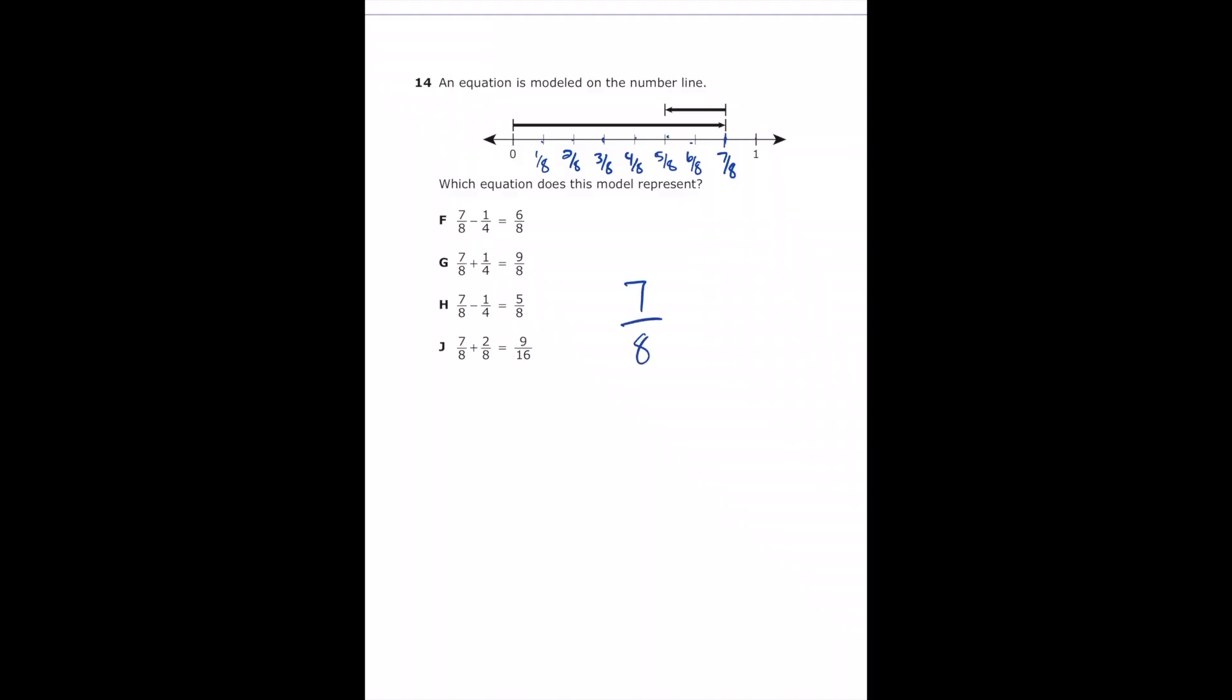So we're going to 7 over 8 right here. And then we're moving backwards. We're subtracting 1, 2, which is minus 2 over 8. Now I don't see that in the answer choices, but we know that 2 over 8 is the same thing as 1 over 4, one fourth. So we're looking for 7 over 8 minus 1 fourth. So I see that in F and H. We just need the one with the correct answer. So if we look back at the graph, we end up on 5 over 8. And that's going to be letter H.